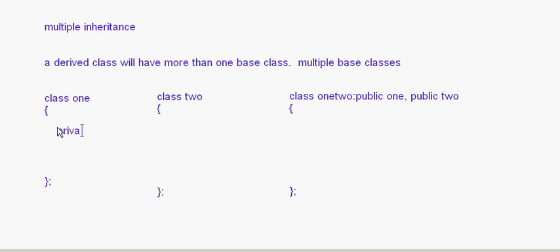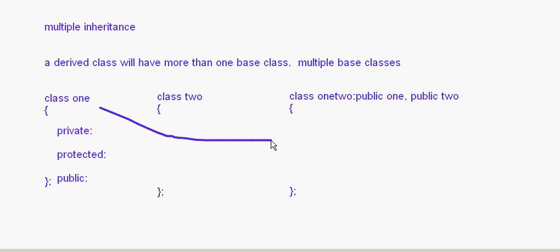The base classes can have private, protected, and public sections. The derived class 'one_two' is going to have all the members of class one as well as class two — both of them come into this subclass.